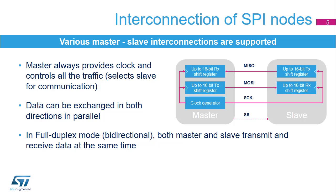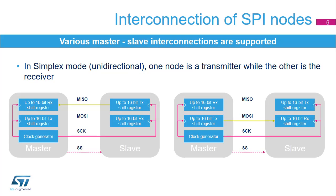In full duplex mode, both data lines are used and synchronous data flows in both directions at the same time. In simplex mode, one node transmits data while the other receives the data. Data only flows in one direction. Depending on the communication direction, only one data line is used.